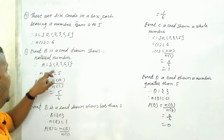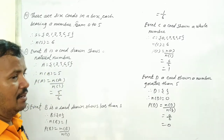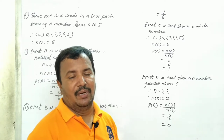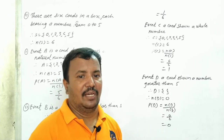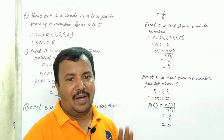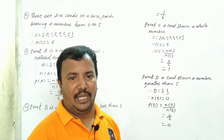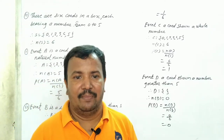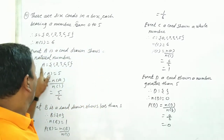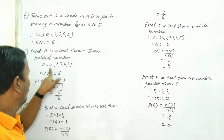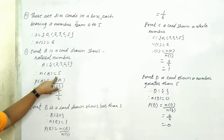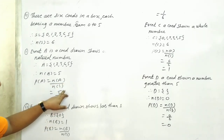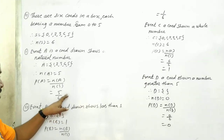Event A: a card drawn shows a natural number. Natural numbers are 1, 2, 3, 4, 5, 6, 7, 8, 9, 10 and so on. So from our cards, A is equal to {1, 2, 3, 4, 5}. Number of A is equal to 5. Probability of A is equal to number of A upon number of S, that is 5 upon 6.